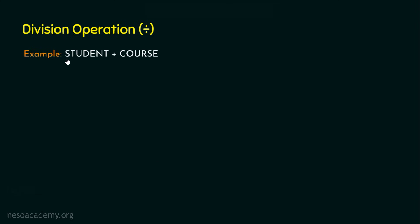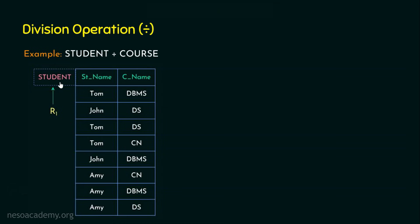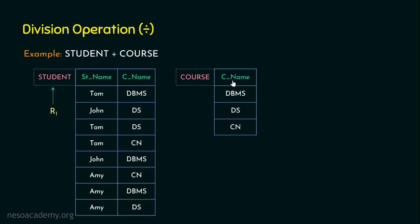Let's see an example. We are going to perform student divided by course. We will have two relations: the student relation with two attributes — student name and course name — where students have enrolled in some courses. The course relation has only one attribute, course name, which contains DBMS, data structures, and computer networks.